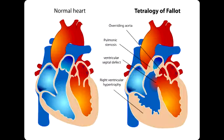Tetralogy of Fallot is a congenital heart defect in which there are four anatomical abnormalities of the heart. This is the most common type of cyanotic heart defect and is the most common cause of blue baby syndrome.